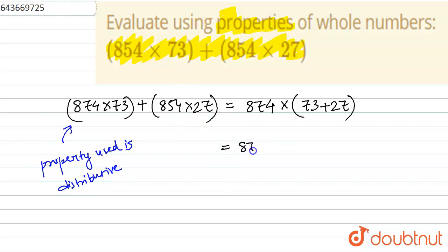That is 854 into, now 73 plus 27 is 100. I'm writing here 100. And 854 into 100 is 85400. So this is the required solution to this question.